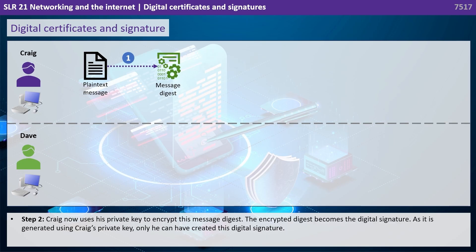Craig now uses his private key to encrypt this message digest. The encrypted digest becomes the digital signature. As it is generated using Craig's private key, only he can create this digital signature.